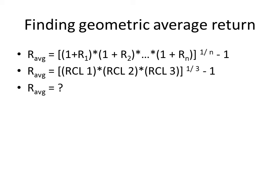Now we are finally ready to calculate our geometric average return. And it's pretty simple. Here's the formula at the top for geometric average return. n is simply the number of returns that you have to work with. In our case, it's 3.